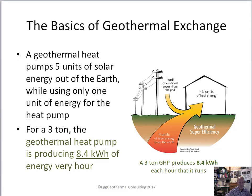In the basics of a geothermal heat pump — and this will apply to air source also — a geothermal heat pump uses one unit of electricity from the grid to pump roughly four units of free energy from the earth. This is depicting a heating mode. When you add those four units of energy to this one unit of electricity, the heat pump is able to deliver a grand total of five units of energy. In this three-ton heat pump example, a three-ton heat pump can produce 8.4 kilowatts of heat every hour it runs.